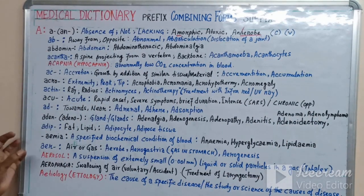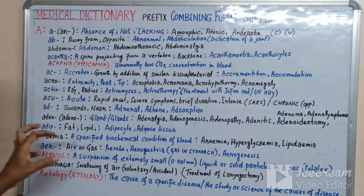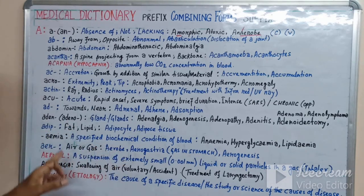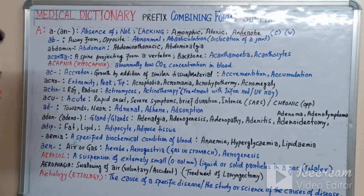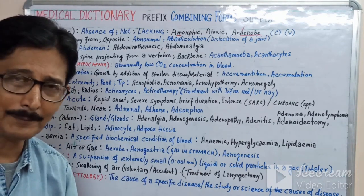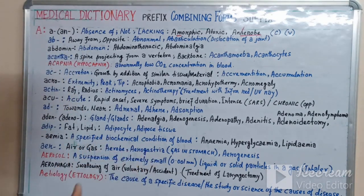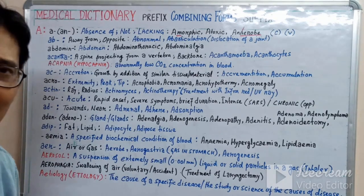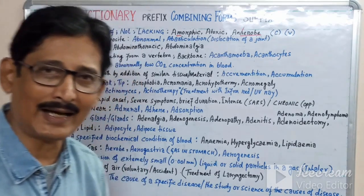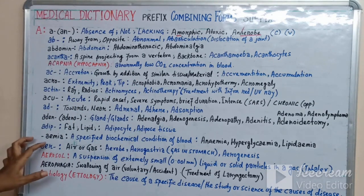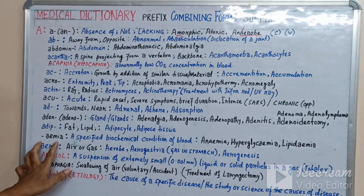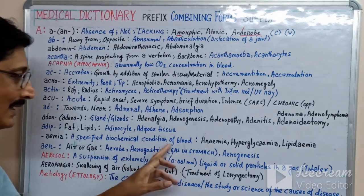'Adip-'/'adipo-' means fat or lipid. An 'adipocyte' — 'cyte' means cell — is a cell that contains large amounts of fat. 'Adipose' refers to tissue that mainly contains fat or lipids, such as the adipose tissue in our belly, which stores fat.